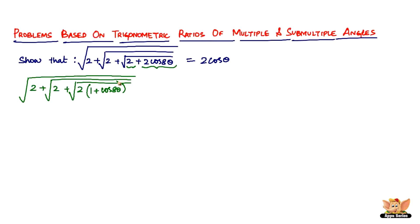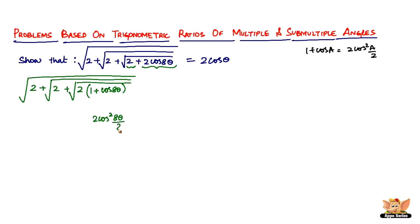So 1 + cosA is nothing but 2cos²(A/2). Similarly, 1 + cos8θ is going to be 2cos²(8θ/2), which gives us 2cos²4θ. So the innermost expression becomes 2 × 2cos²4θ.